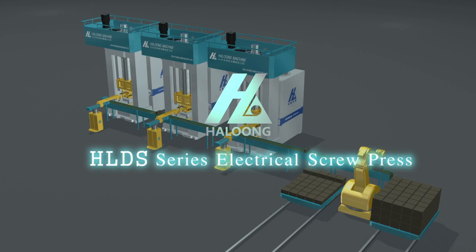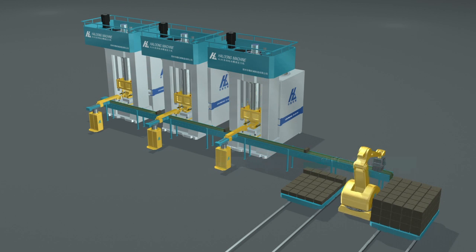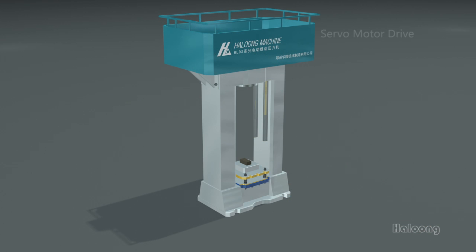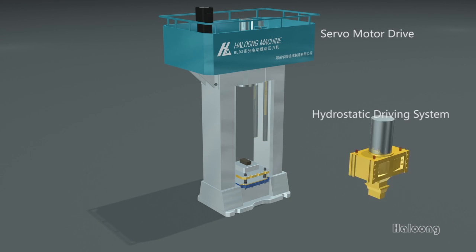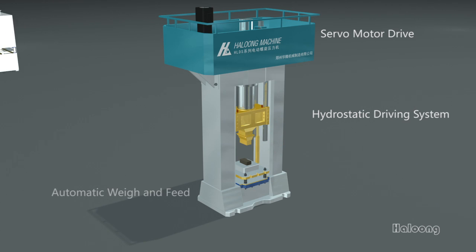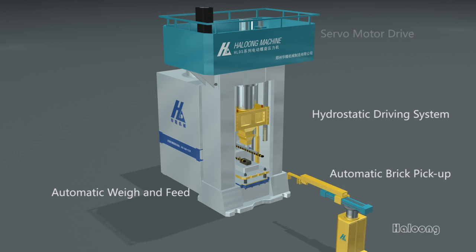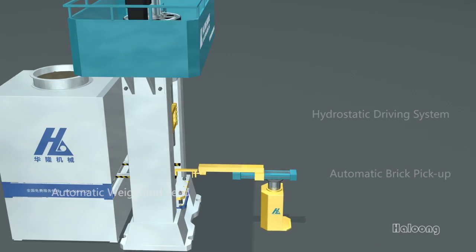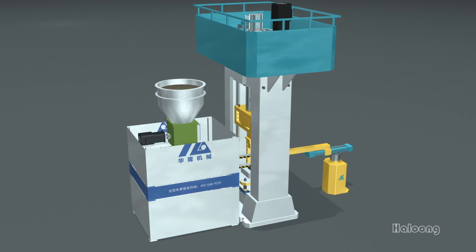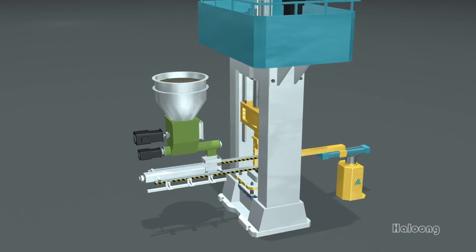Haloong HLDS series electric screw press machine is directly driven by the servo motor and power force is transferred by the static pressure type screw nut system. It is accessible to the automatic weighing and the feeding device and the brick picking system according to the customer's need.